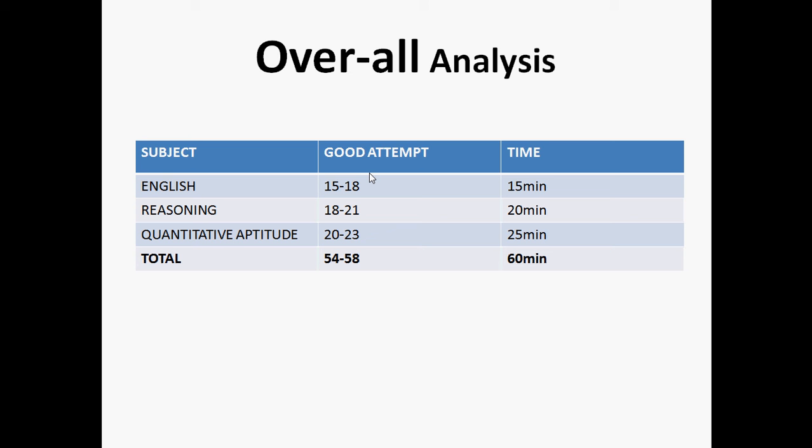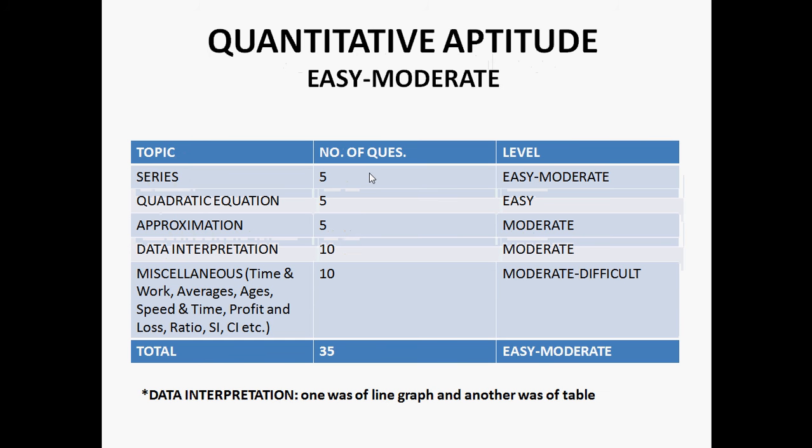The level of quantitative aptitude was easy to moderate. There were five questions from series and five from quadratic equations - both were easy to moderate. There were five questions from approximation.